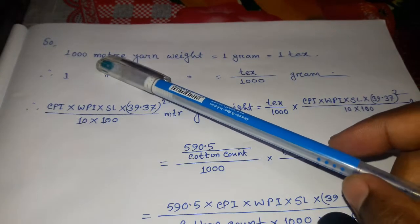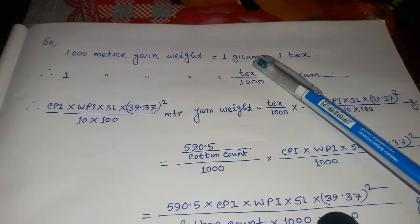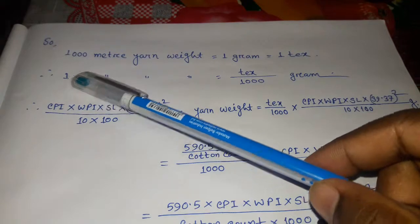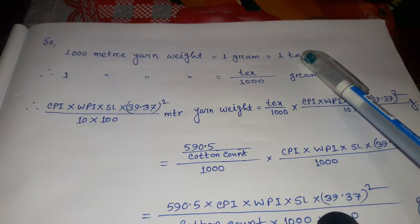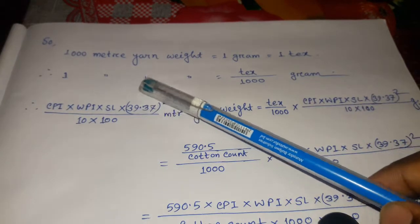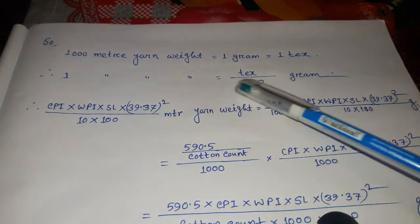One thousand meter yarn weight equals one gram, which equals one tex as per the tex count formula definition. So one meter yarn weight will be one tex divided by one thousand in grams.